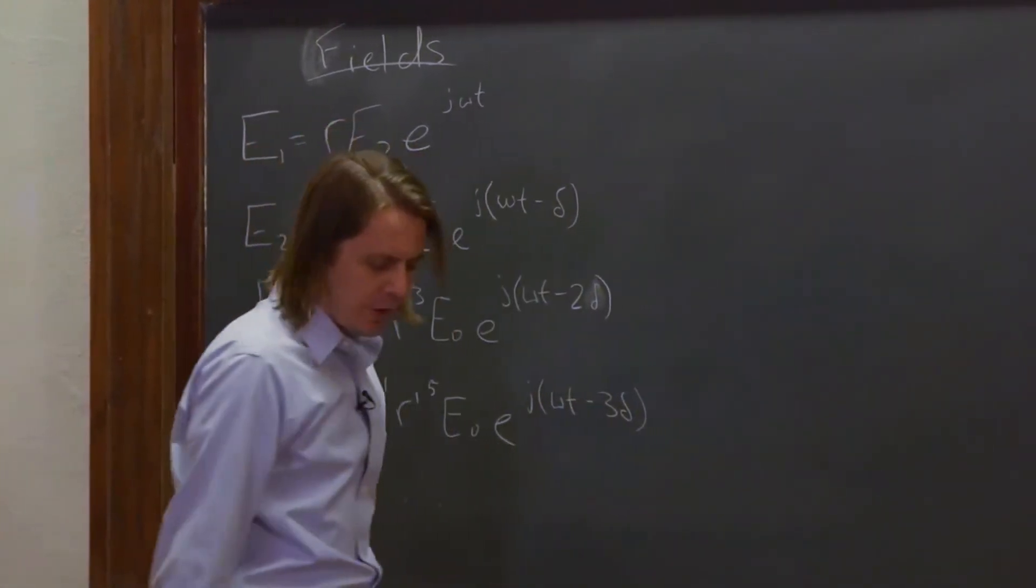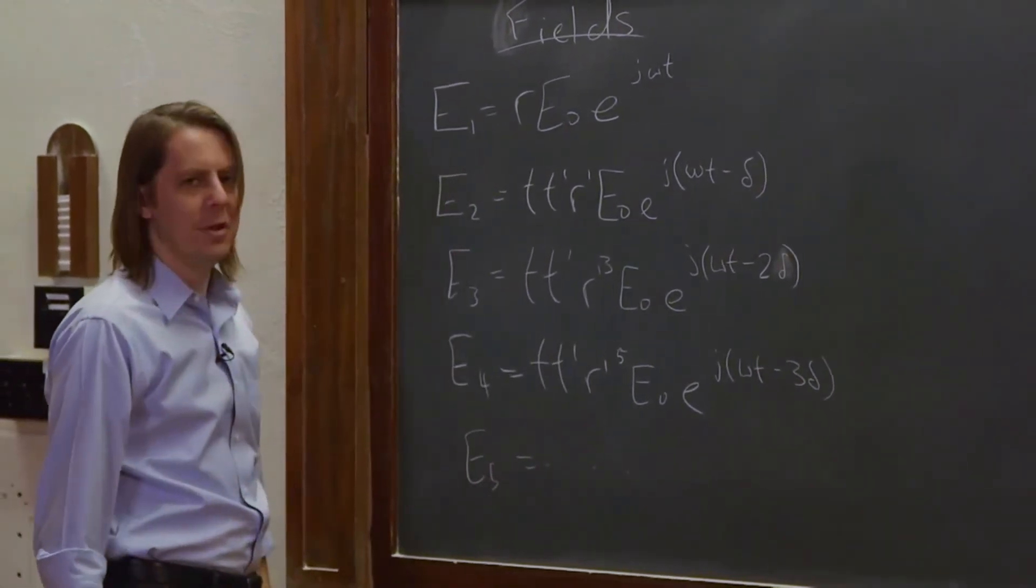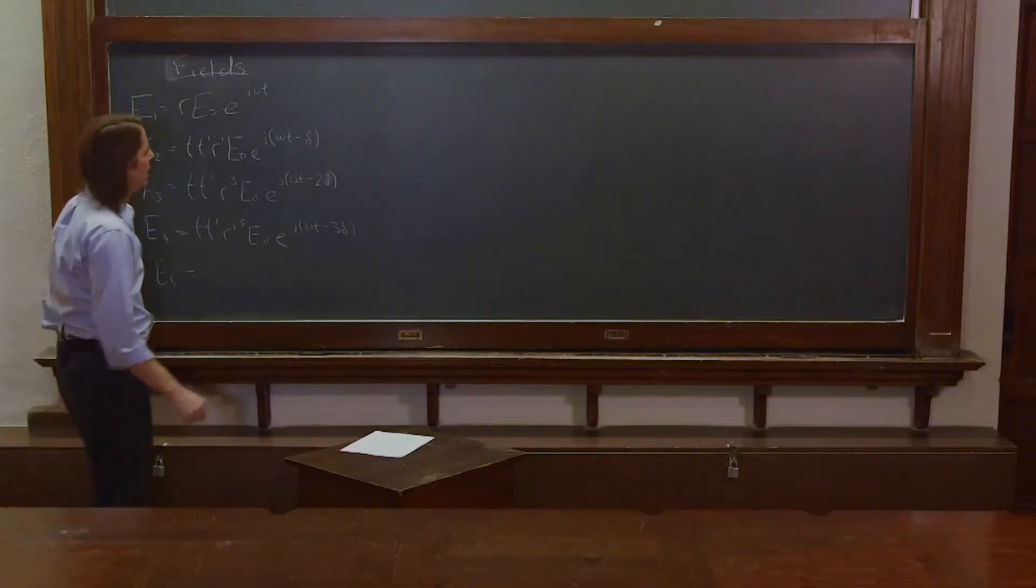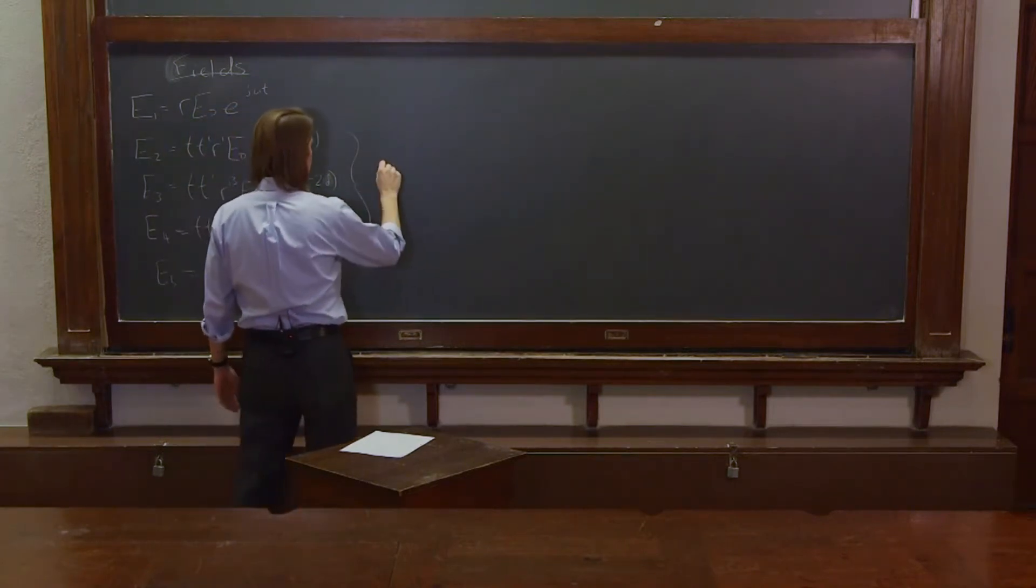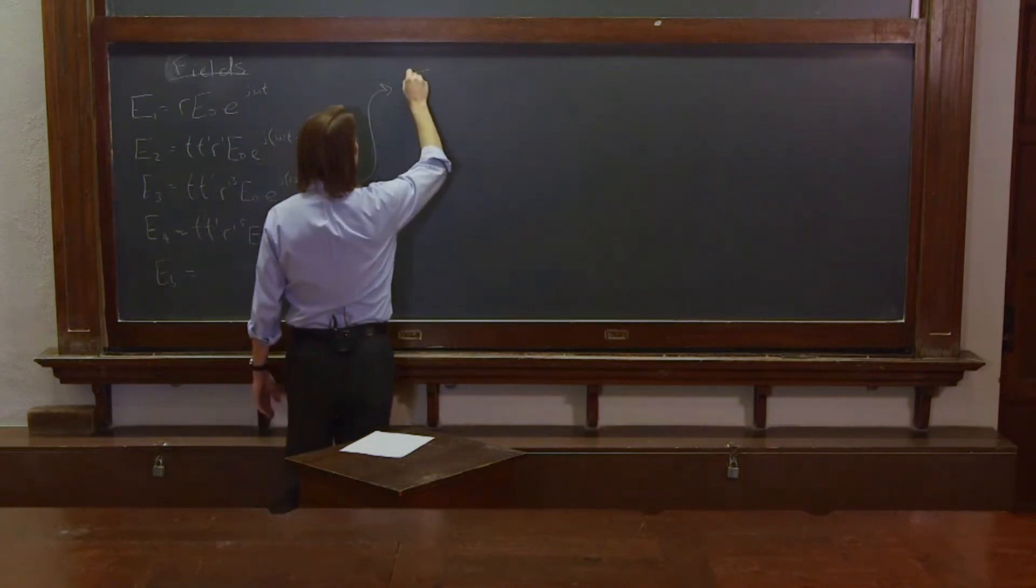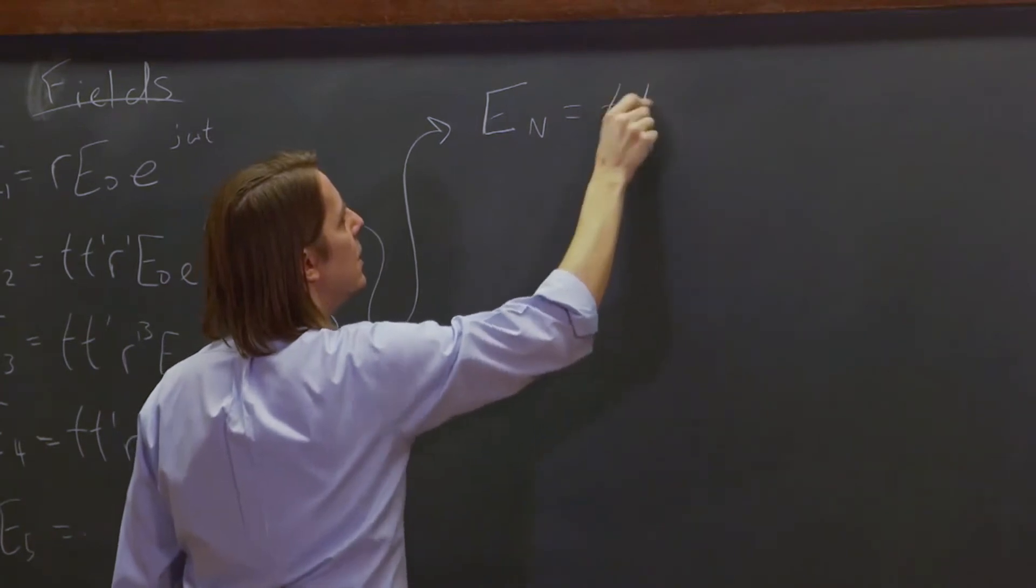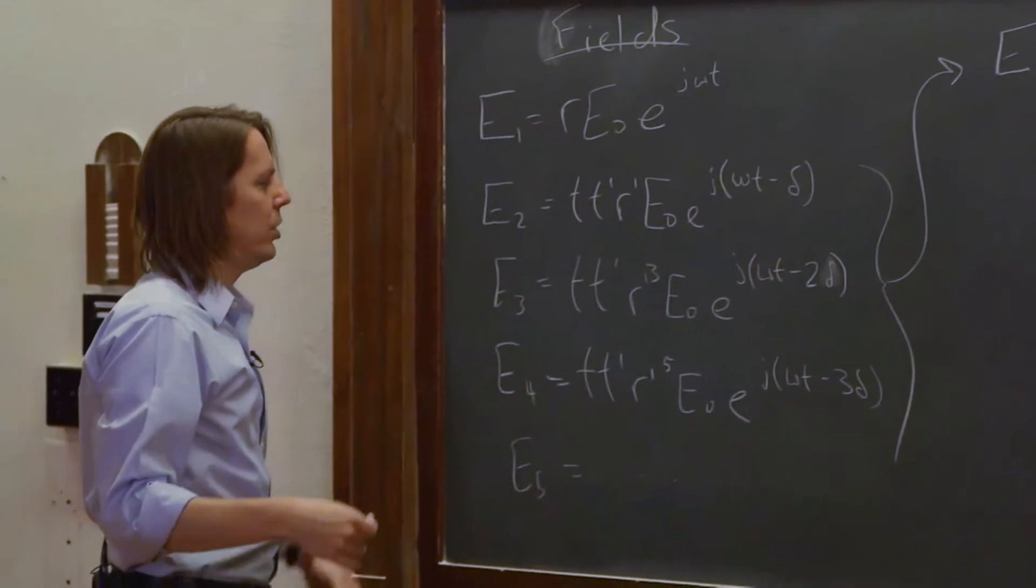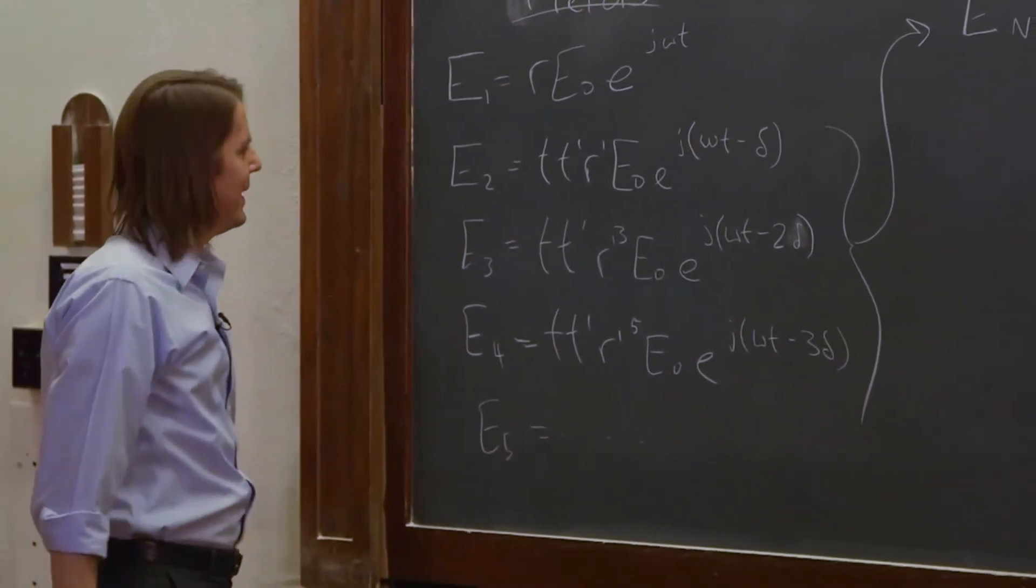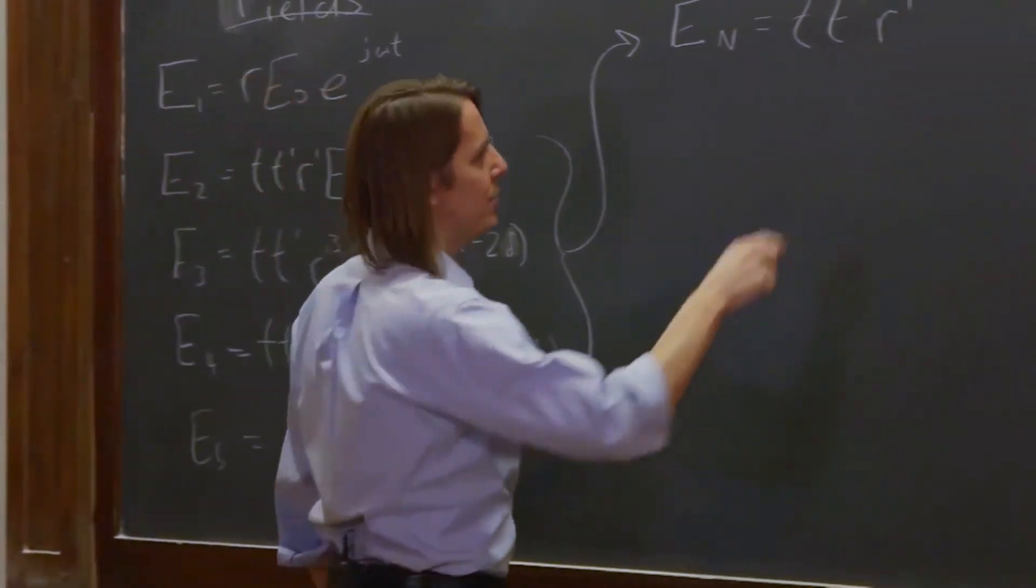So what we can write here is there's definitely a pattern for E2 to infinity. E1 is special, the alpha ray is special. But E2 and beyond is En equals T, T prime, R prime. And now we need to know what power to put it to. And it actually, if you look at it and think about it, it's 2n minus three.